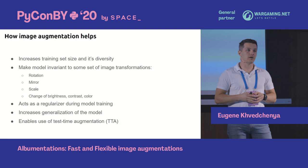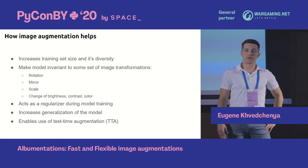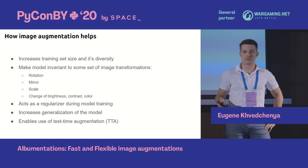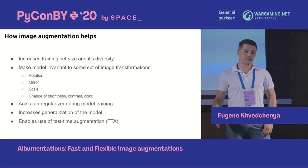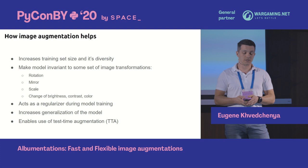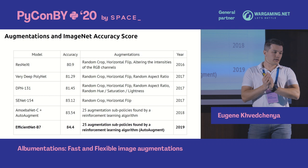Augmentation also enables test-time augmentation during inference. That means that instead of showing only one image to your model for classification, you can send the original image and also a flipped, rotated, or slightly brightness-changed version of it. Then you average the predictions of all N images, which actually decreases the variance of predictions and increases model accuracy.